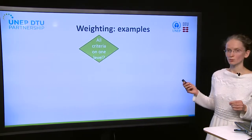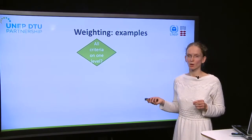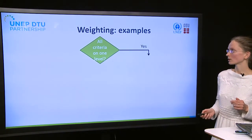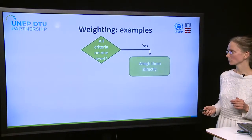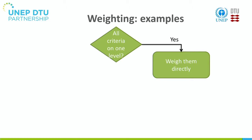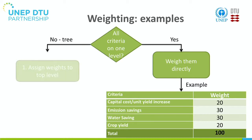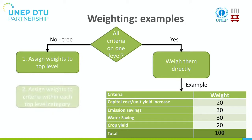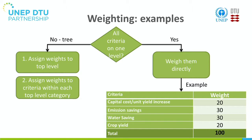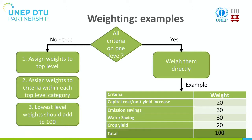Let's look at some examples. The way you will weight criteria depends on whether you have all criteria on one level or you have a criteria tree. It is much simpler if you only have one level with few criteria — you can take the cake and divide it directly among them. For example, if you have four criteria and your budget of 100, you can divide it directly between the four. But if you have more than four or five criteria, it is better to organize them in a tree, and then the procedure will be stepwise. First you assign weights to the top level, then to the criteria within each top-level category, following through until the bottom, where the lowest-level weights should add to 100.